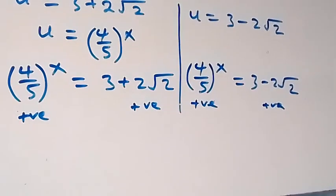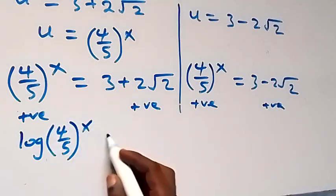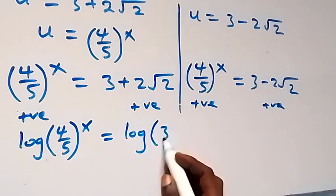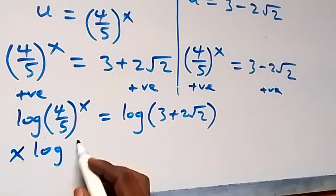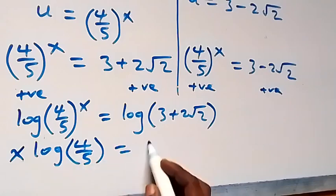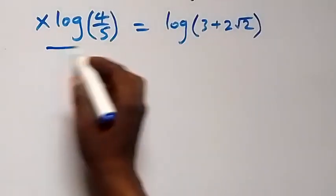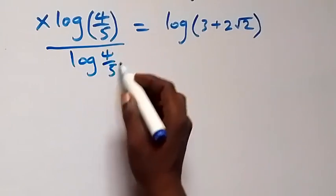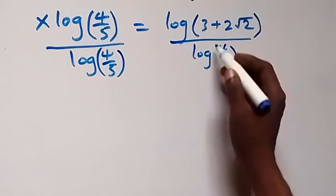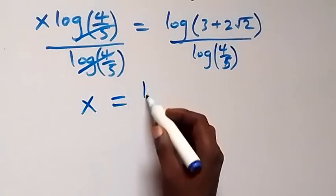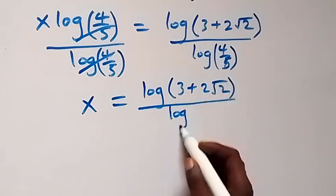From here, we take the log on both sides. We have log of 4 over 5, all raised to power x, equals to log of 3 plus 2 root 2. Applying the power rule of logarithms, we have x times log of 4 over 5 equals to log of 3 plus 2 root 2. Dividing both sides by log of 4 over 5, the left side cancels and we have x now equals to log of 3 plus 2 root 2, divided by log of 4 over 5.